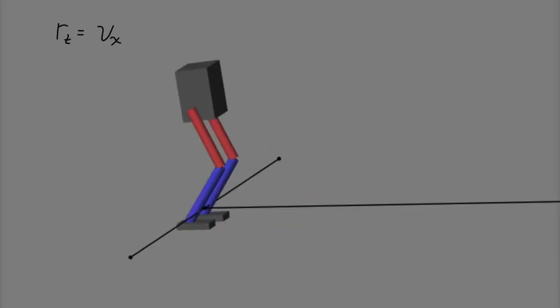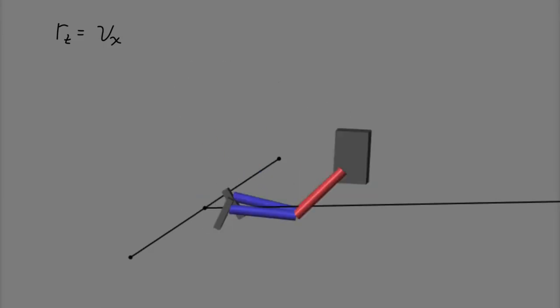And training with this reward, we can see that the robot dives forward to get that quick burst of speed at the beginning, and then it falls over and doesn't really make it anywhere. Now it may eventually figure out how to make it further with this reward, but it was taking a long time to converge and not making a whole lot of progress. So let's think about what we can add to the reward to help with training.